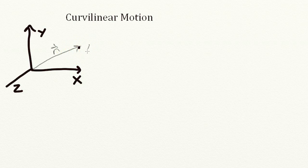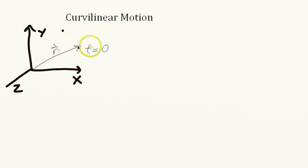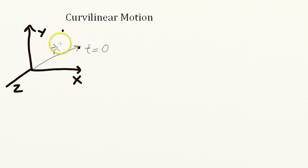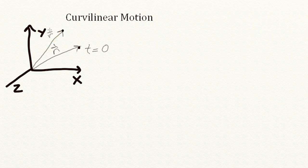So that's the location of the point at t equals 0, and at some later time the point has moved and we have a second vector describing the point at this later time. This vector we'll call r prime.